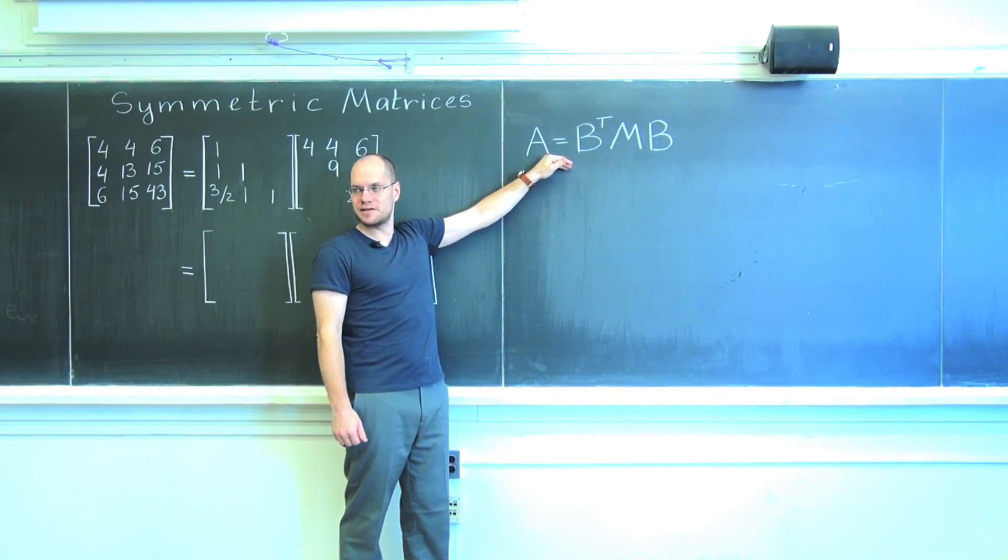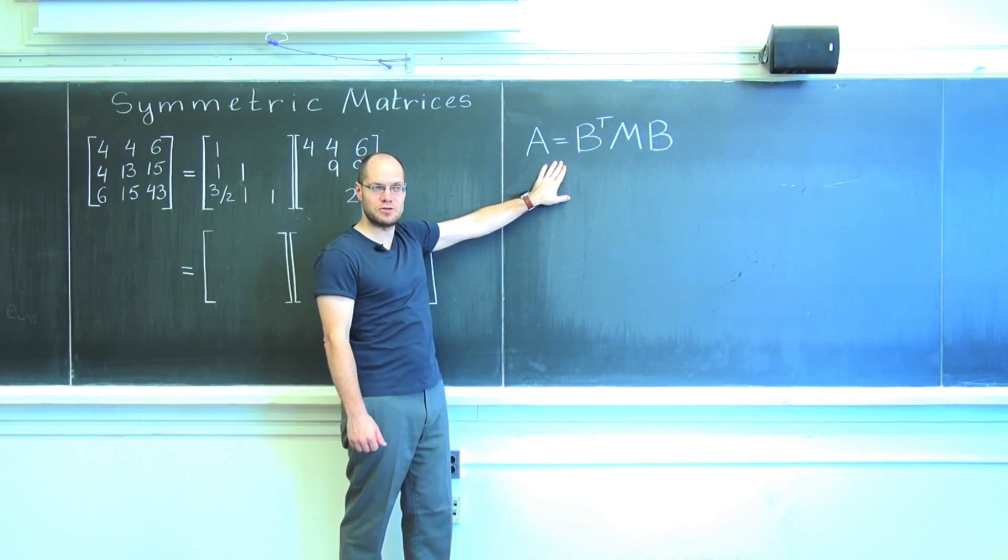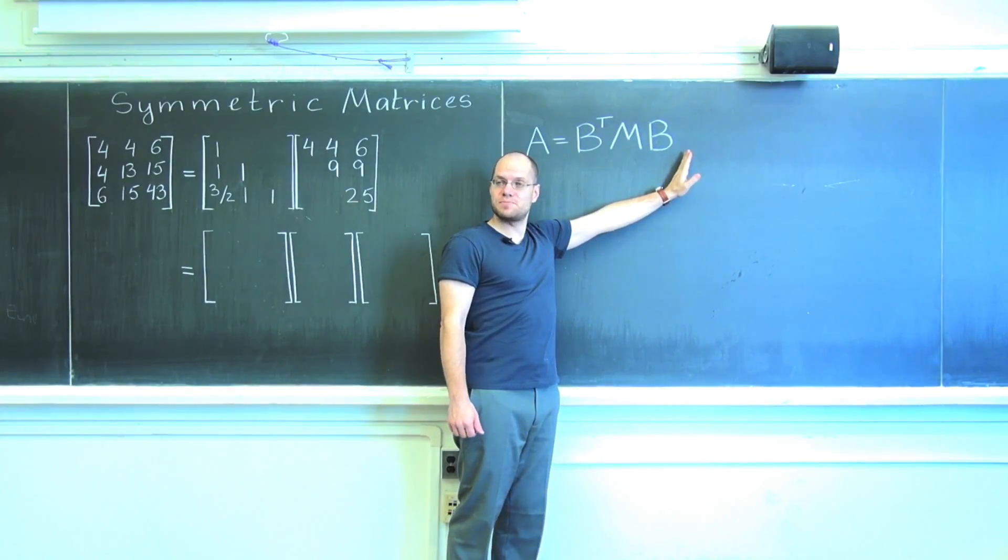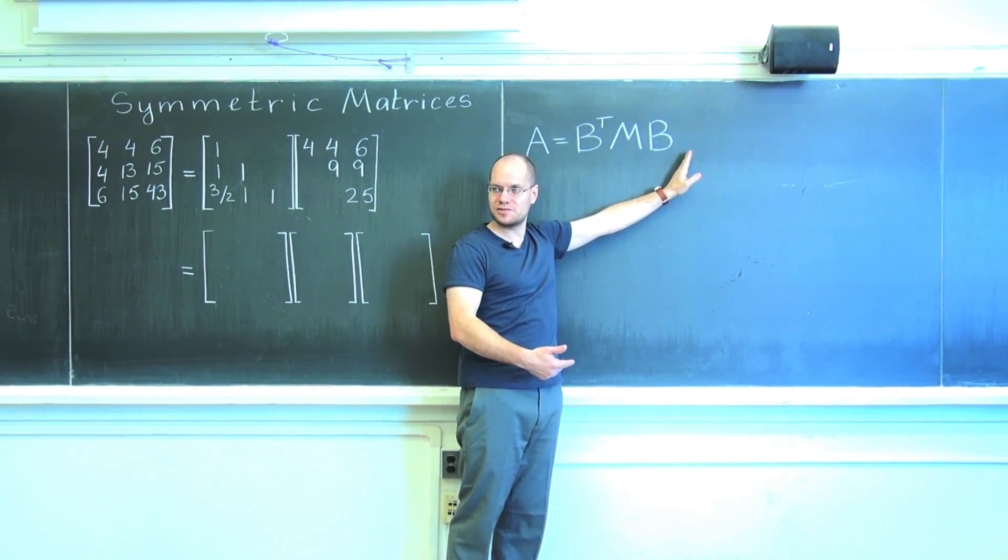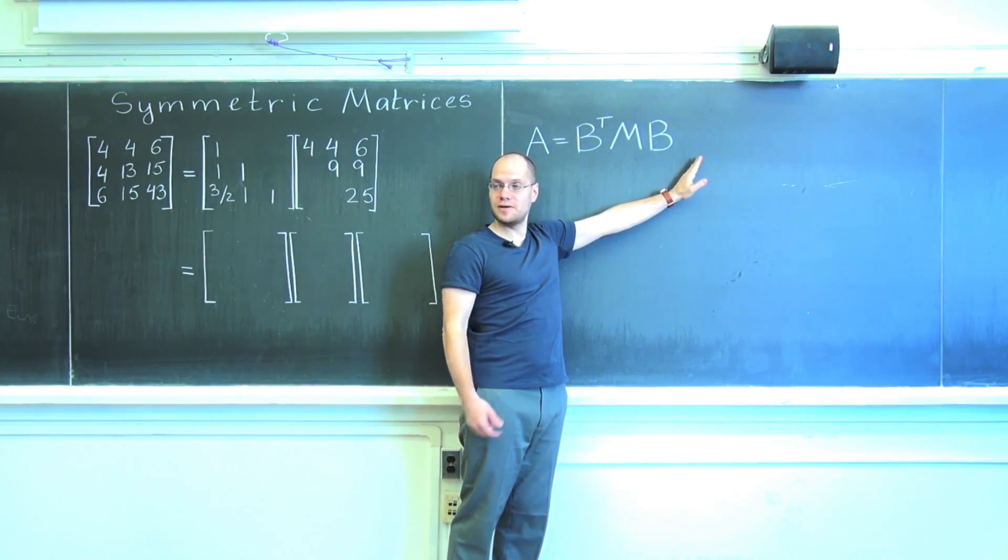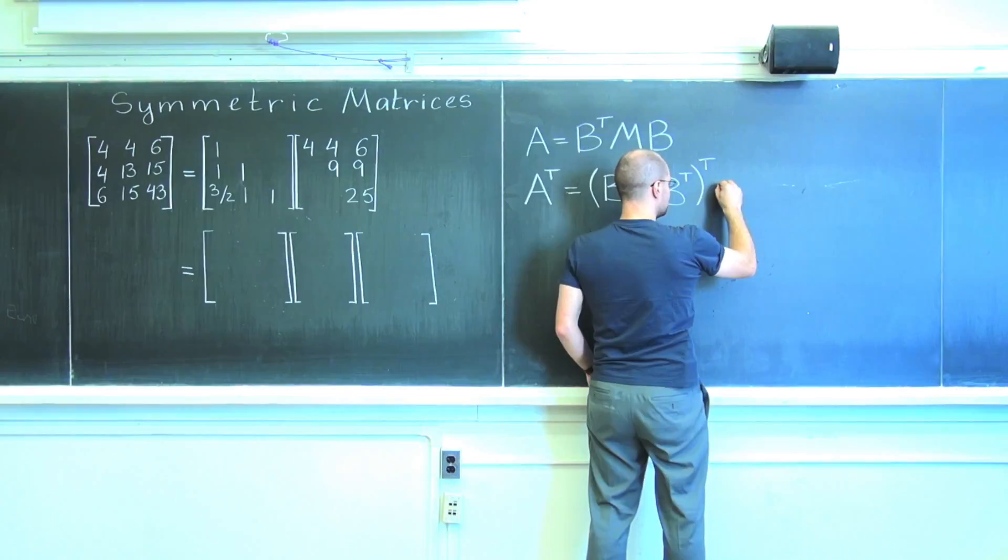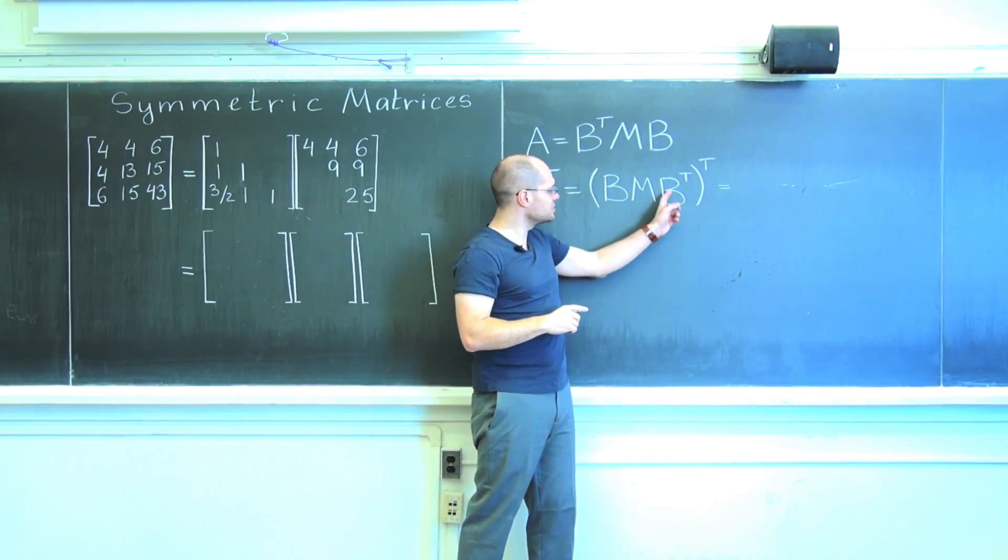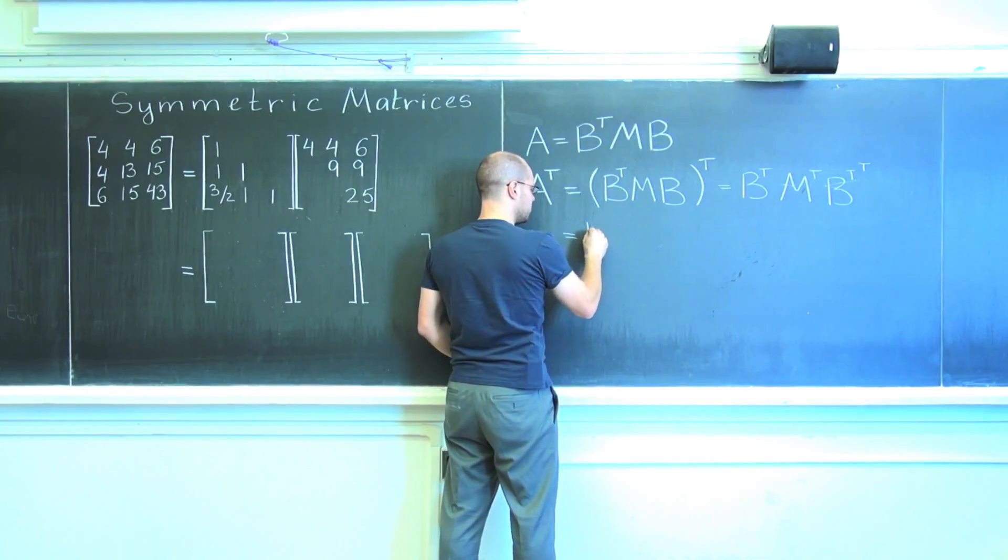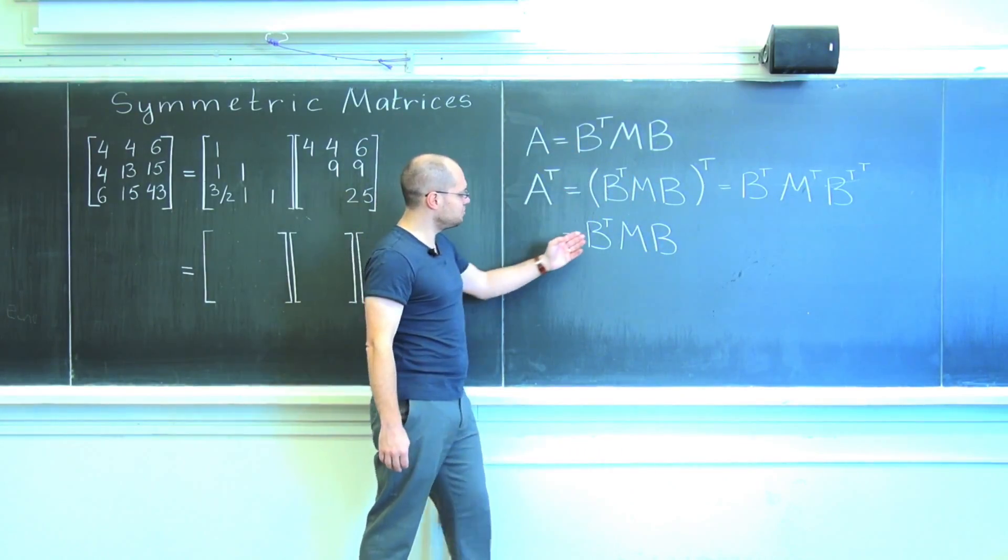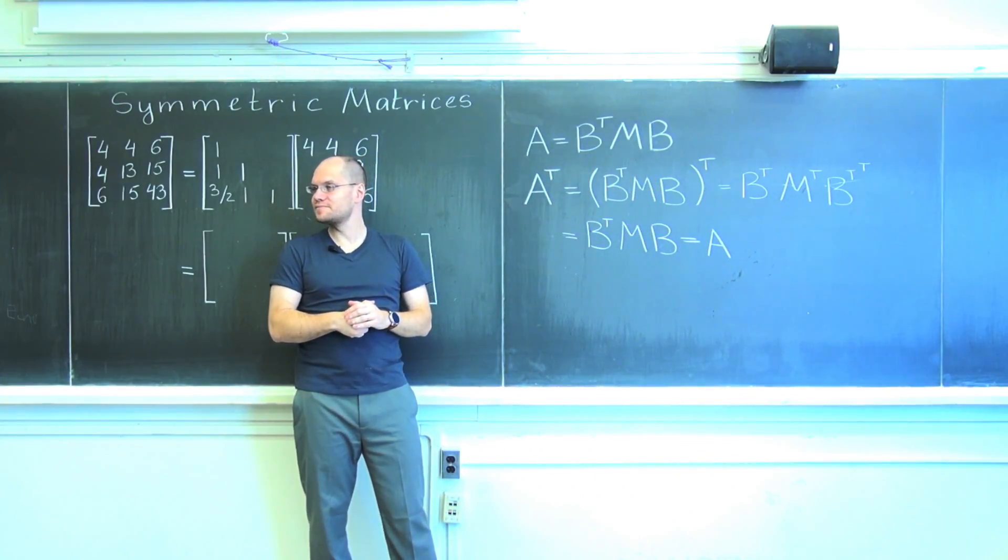What would it mean for matrix A to be symmetric? Well, if its transpose equals A. So let's see what its transpose is. I will write down A transpose and then evaluate the transpose of this product. Transpose of a product is the product of the individual transposes in the reverse order. Which I'm now going to write: the individual transposes in the reverse order. This simplifies to B transpose M transpose B transpose, which is B transpose M B. We recovered A. So yes, A is symmetric.